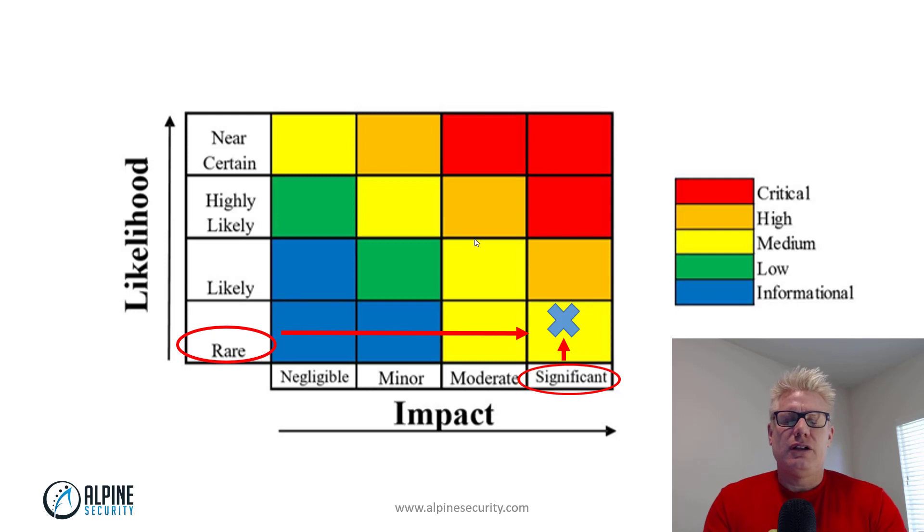In this scenario, let's say we had a Windows Server 2016 system that was housing or held protected health information, personally identifiable information, or intellectual property, or a combination of those three. But it is fully patched. So that Windows 2016 server could apply to this risk matrix right here. It's fairly rare. It's rare from a likelihood perspective that somebody can break into it because it's fully patched.